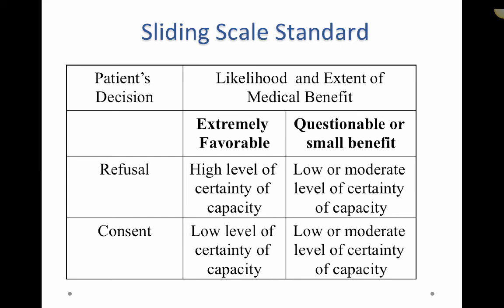Here is an example of the sliding scale standard. For a treatment with an excellent chance of restoring health, without which a patient is likely to die, when the patient agrees to the recommended treatment, their competence is rarely called into question. For example, when a patient with mild dementia agrees to life-saving but relatively risk-free surgery for acute appendicitis, physicians would unlikely call in a psychiatrist to examine the reasoning. On the other hand, if the same patient refused the surgery, the test for competency would likely become more stringent. So, when a patient wants to refuse intubation, we want to be more certain of the patient's capacity.